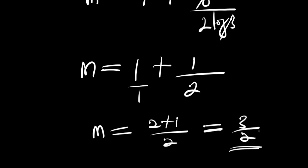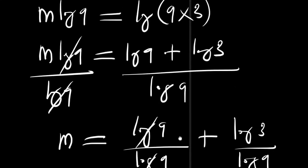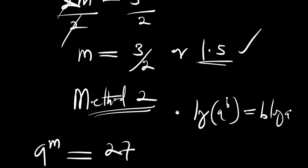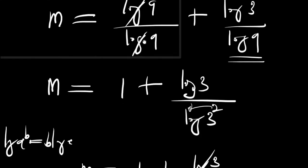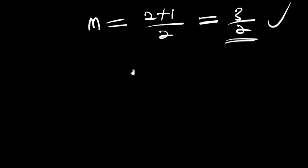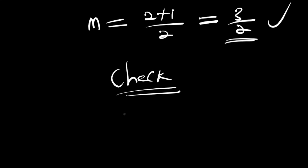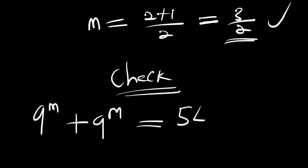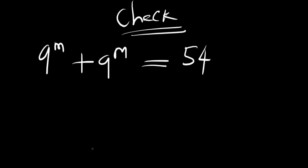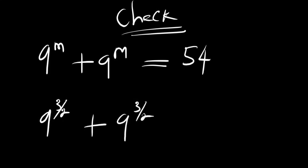So 3 over 2, or one and a half — the same answer we got with Method 1. Now we are going to check that the answer is correct. Remember we had 9 power m plus 9 power m equals 54. If we insert m equals 3 over 2, then we should get 54: 9 power 3 over 2 plus 9 power 3 over 2 equals 54.